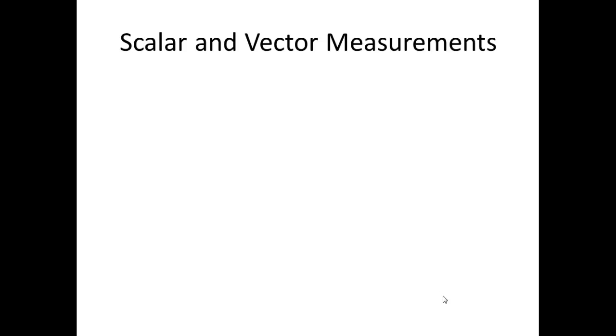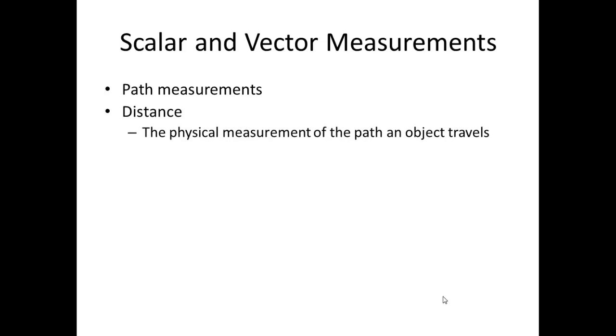There are scalar and vector measurements for a number of our motion vocabulary. The first category is path measurements. The first is distance. Distance is the physical measurement of a path that an object travels. It is a scalar quantity and the direction of the path has no bearing.